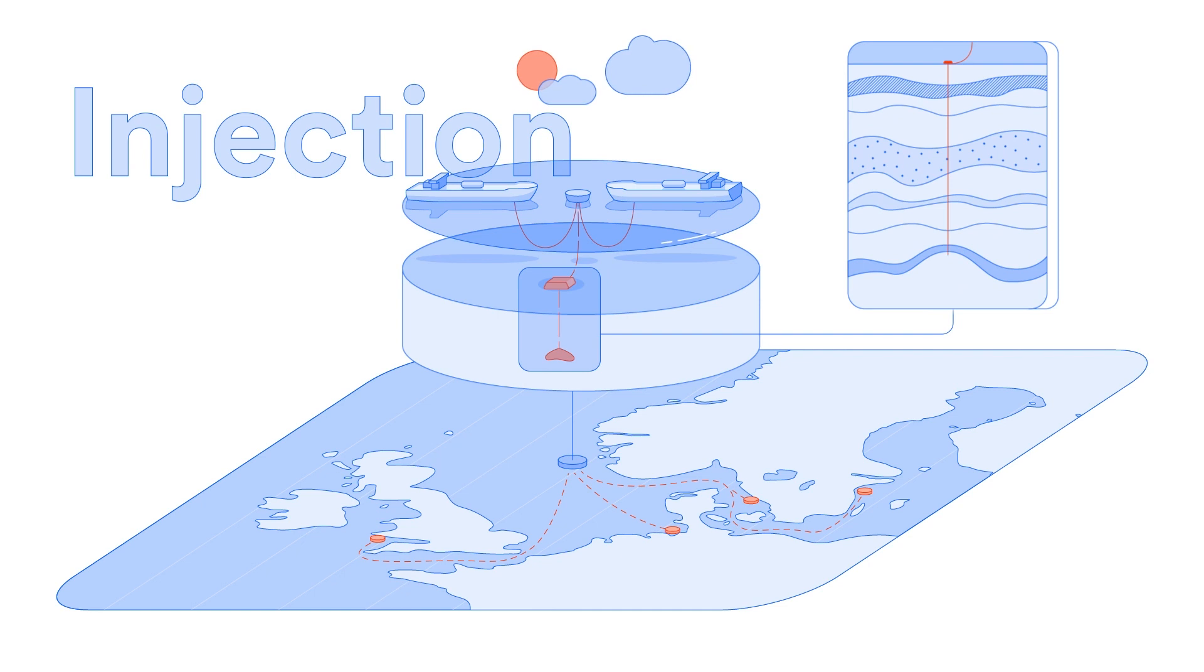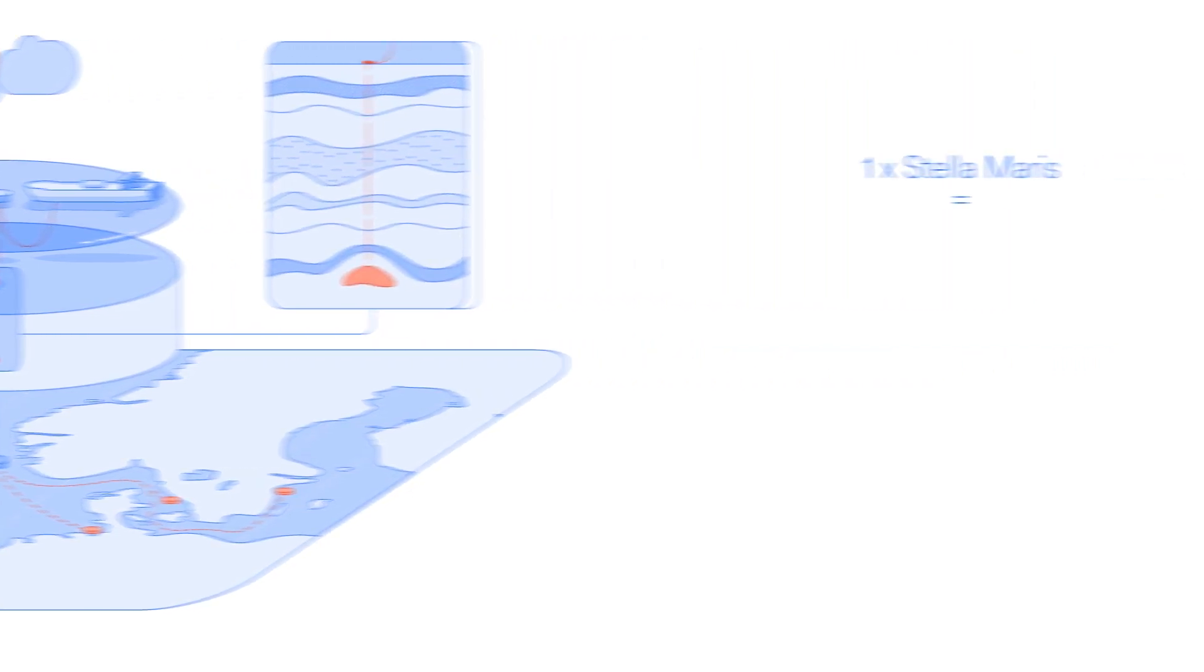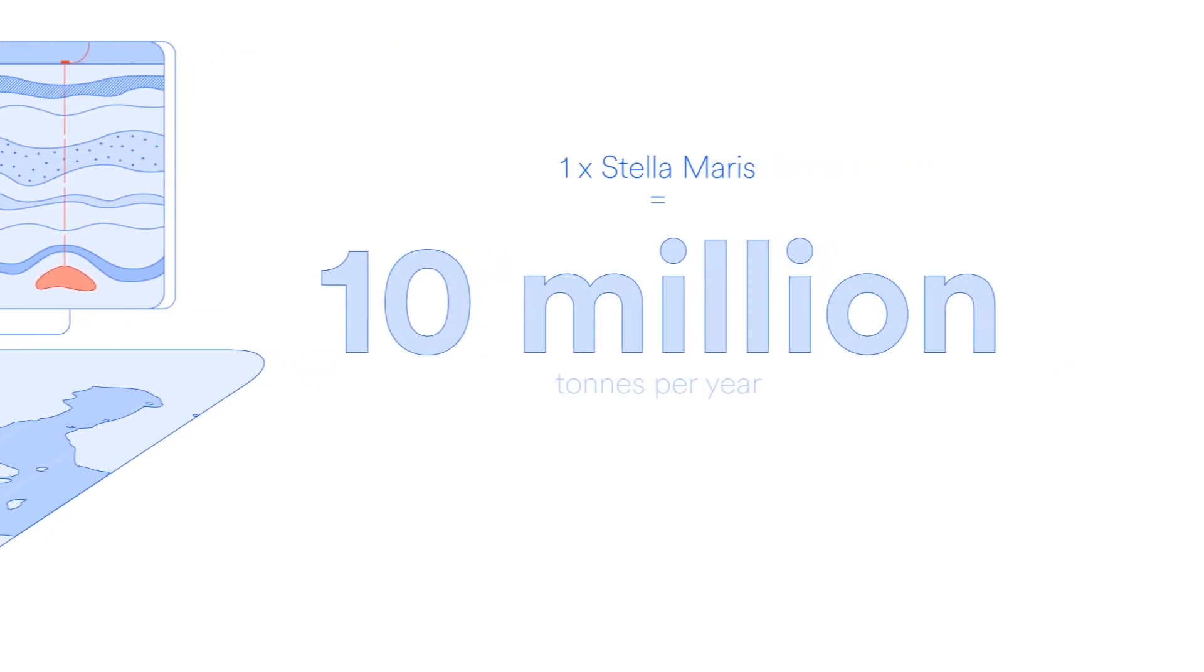Large-scale CCS plays a crucial role in nearly all emission scenarios based on the goals of the Paris Agreement. A single Stellameris project will have the capacity to store 10 million tons per year.